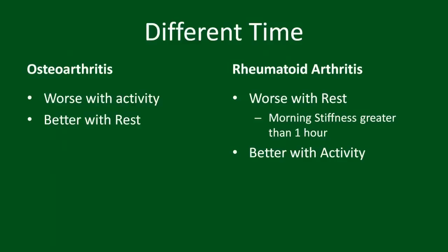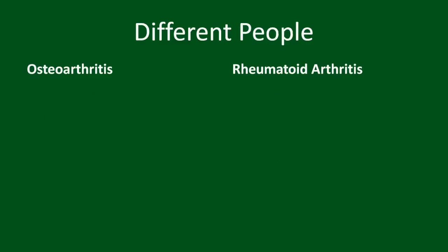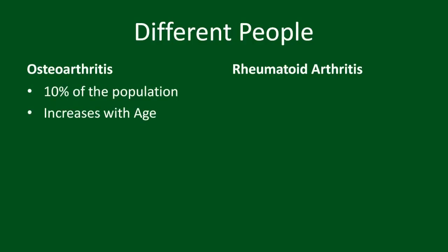Who gets arthritis? Osteoarthritis is relatively common, occurring in approximately 10% of the population and increasing with age. While not entirely accurate, it is often thought of as being due to wear and tear.